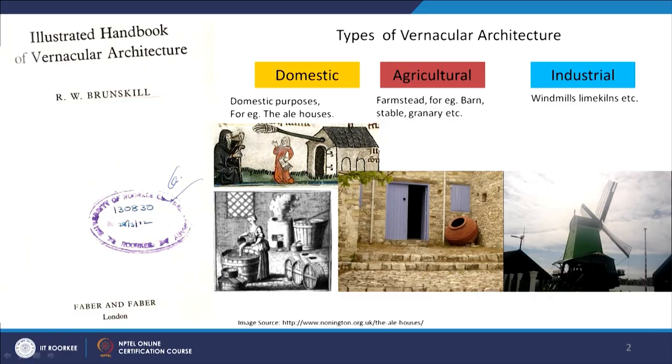The domestic category covers buildings used for eating, sleeping, cooking, and all kinds of domestic work. It extends beyond dwellings to include small homemade breweries or cheesemaking buildings — essentially small cottage-level buildings. For example, the alehouses of Monnington, where women were employed in particular sections of the brewery as a kind of family business or community group involved in local economies — that is what we refer to as domestic architecture.